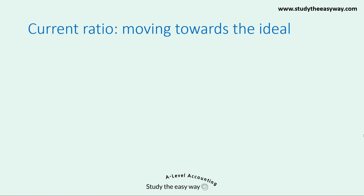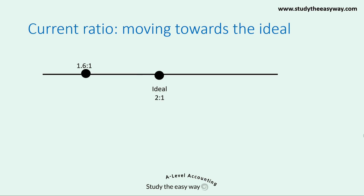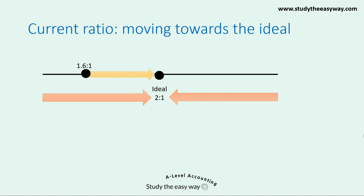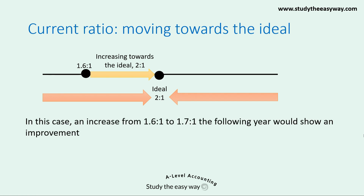An improvement in the current ratio is where the ratio over time moves towards the ideal level. For example, imagine a business whose current ratio stands at 1.6 to 1, with the ideal regarded as 2 to 1. The ratio is considered to be improving when there is movement towards that ideal level. So an increase from 1.6 to 1 to, for example, 1.7 to 1 the following year would show an improvement.